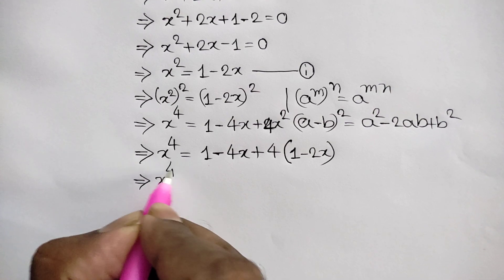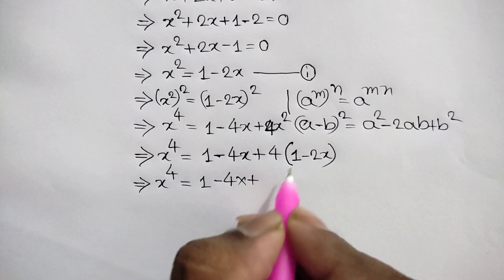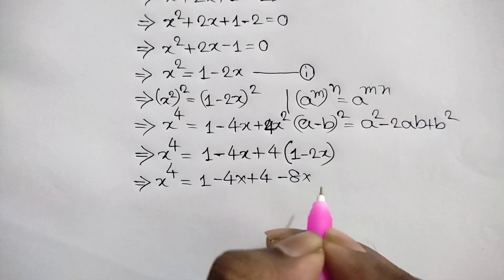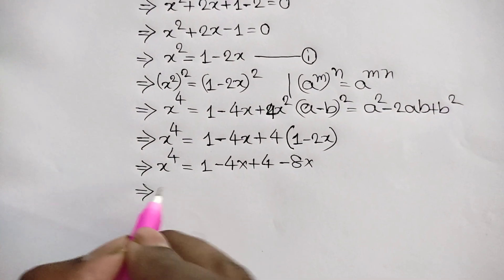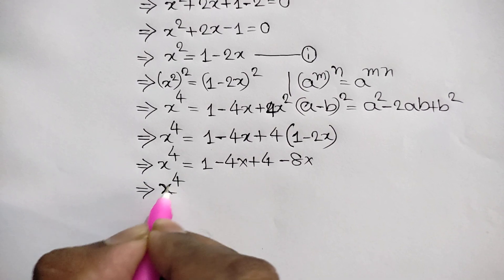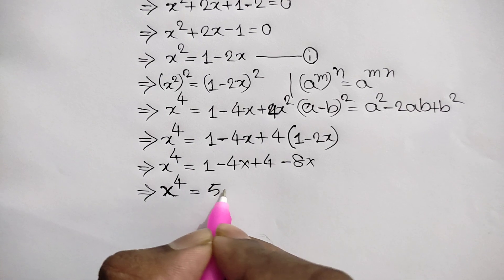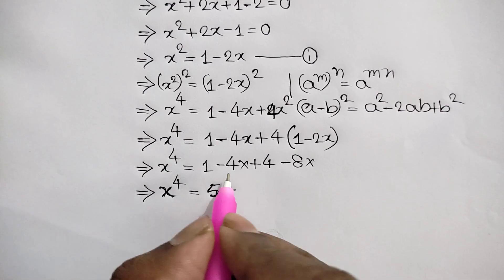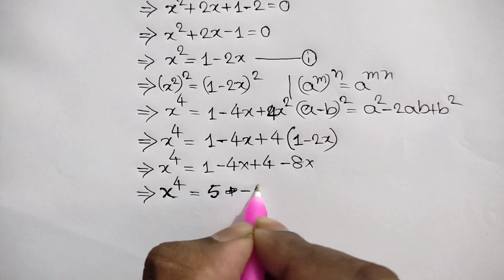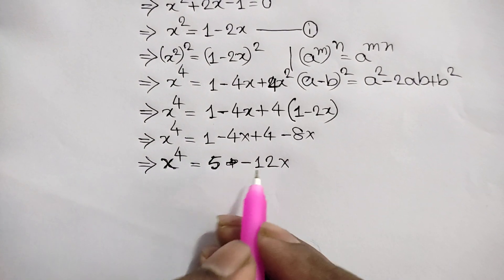So x⁴ = 1 - 4x + 4 times (1 - 2x) = 1 - 4x + 4 - 8x. Simplifying, x⁴ = 5 - 12x.